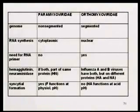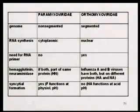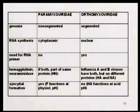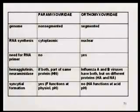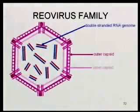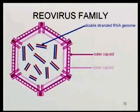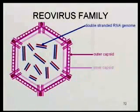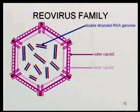The orthomyxovirus hemagglutinin, which also functions as a fusion protein, needs an acid pH — it doesn't become fully active until it gets into the next cell. When it's released from one cell it has to be cleaved to have the ability to become active, but it's not actually activated until it gets into an acidic environment. Are there any questions about flu or paramyxoviruses before I move on to Reoviruses? This is the last family I want to discuss.